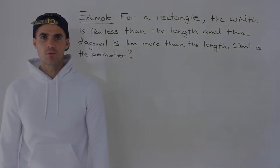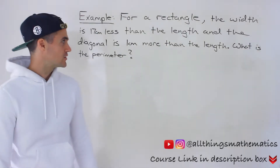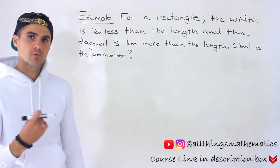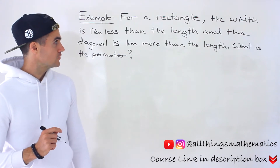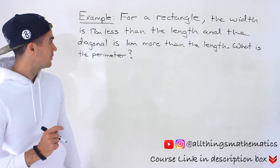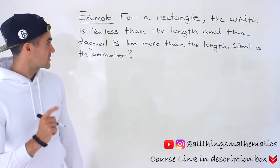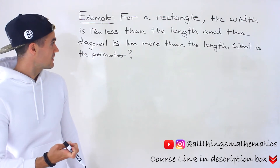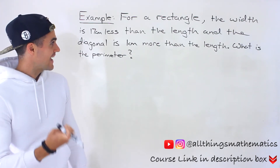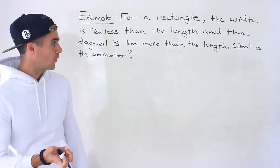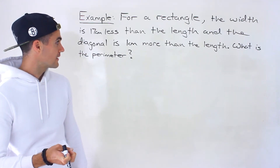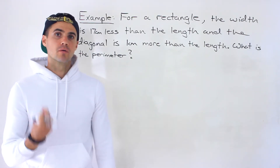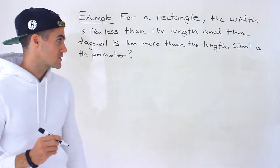What's up everyone? Patrick here. Welcome back. Moving on to the next example dealing with quadratic equations. We're told that a rectangle has a width that is 17 centimeters less than the length, and the diagonal is one centimeter more than the length, and we have to find out what the perimeter of this rectangle is.